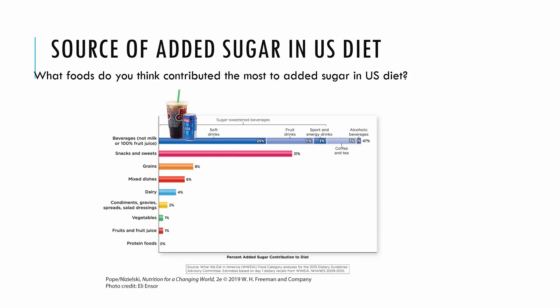What foods contribute the most added sugar in the U.S. diet? By far it's beverages — not including milk or 100% fruit juice, but soft drinks, fruit flavored drinks, energy drinks, and coffee or tea with added sweeteners. This makes up 47% of our added sugar, followed by snacks and sweets. Dairy and grains make up a much smaller portion. Soft drinks are one big area where we can ask whether we're getting a lot of nutrition or what the nutrient density of that food is.